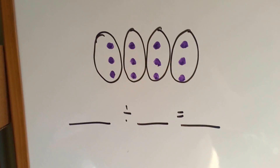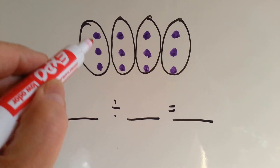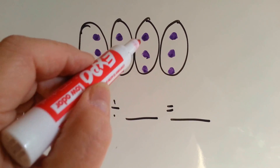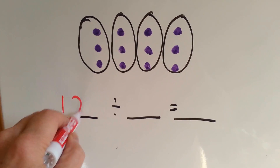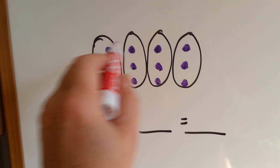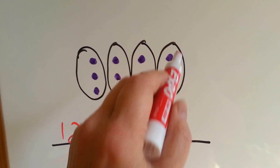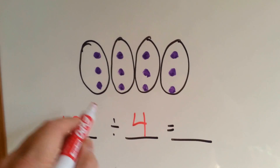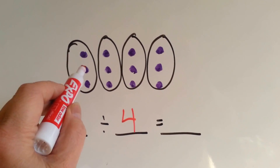Let's try this one. Let's count the total first: 1, 2, 3, 4, 5, 6, 7, 8, 9, 10, 11, 12. How many groups do you see? 1, 2, 3, 4. And how many dots are in each group? 1, 2, 3.